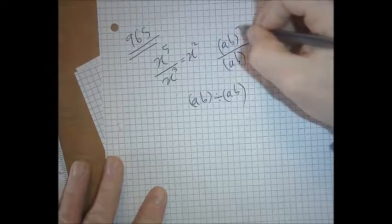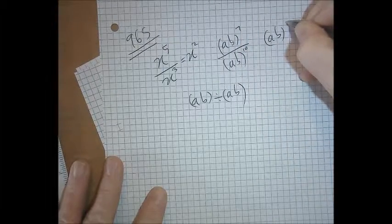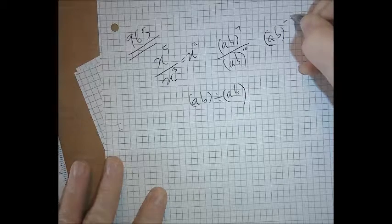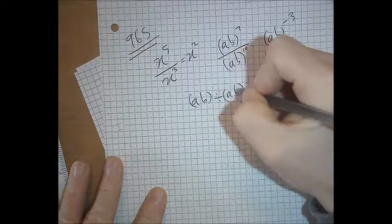If that was a 7 and that was a 10, it would be (a b) in brackets to the power of negative 3, and if it's a division,